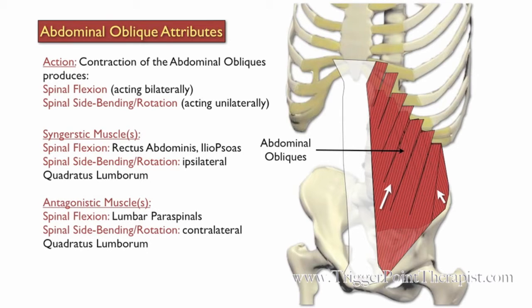The lumbar paraspinal muscles oppose the abdominal oblique muscle during spinal flexion, and the contralateral quadratus lumborum opposes the muscle during spinal side bending and rotation.